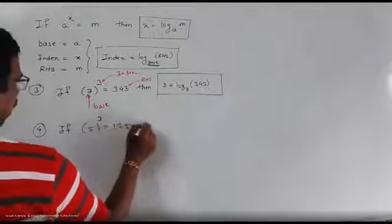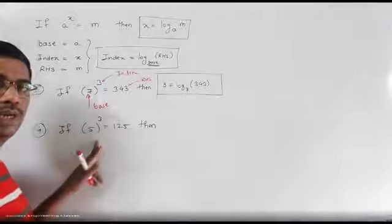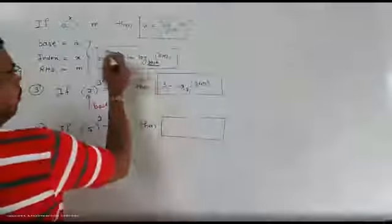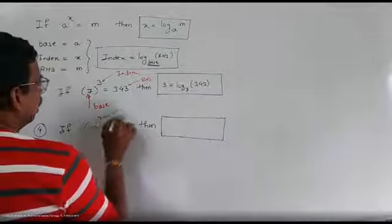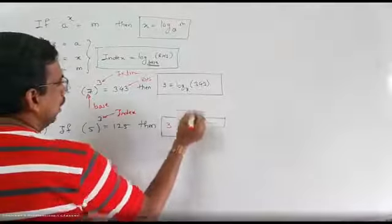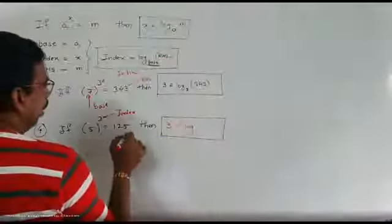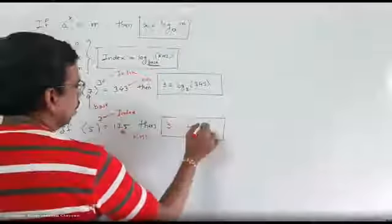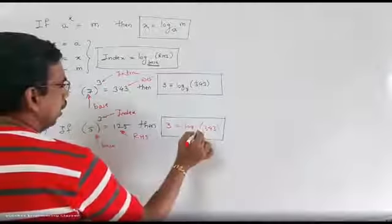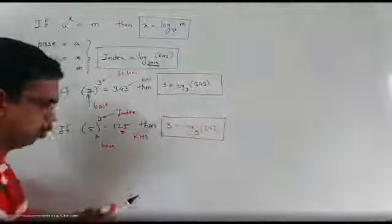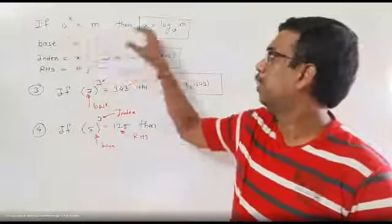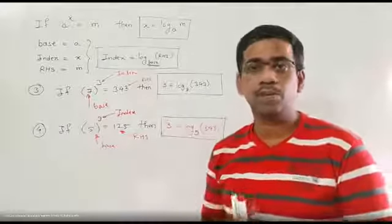What we can say: if 5 cube is equal to 125, then we are interested to write that answer. Please observe it carefully. Then, we are interested to write that logarithmic form. So, how do we get the form? In the form, we need index. What is our index? So, 3 is our index. So, first of all, it will be 3. It is equal to log of, what do we know? So it is 125, that is nothing but our RHS, so it is log of 125 to the base, and what is our base? The base is 5.